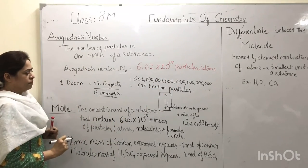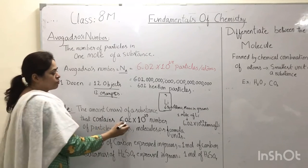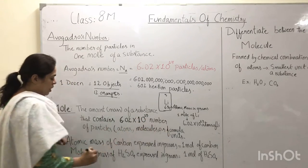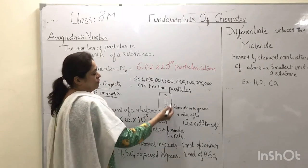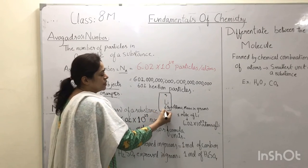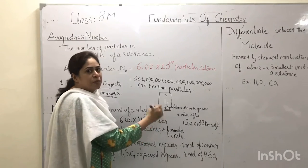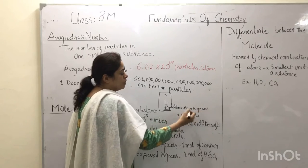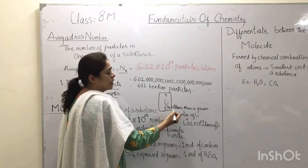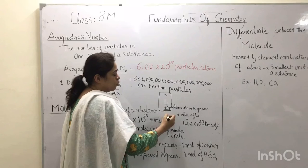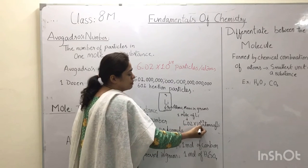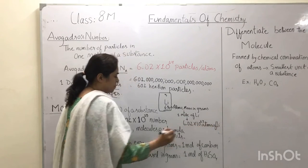A mole is the amount of substance which contains 6.02 × 10²³ number of particles, molecules, or formula units. If we want a mole of lithium, we check the periodic table and see the number at the bottom, which gives the atomic mass of lithium. Taking that atomic mass in grams gives you 1 mole of lithium. So 6.94 grams of lithium contains 6.02 × 10²³ atoms of lithium.